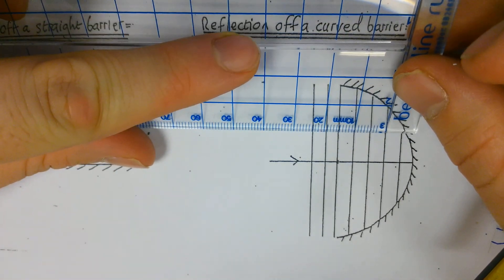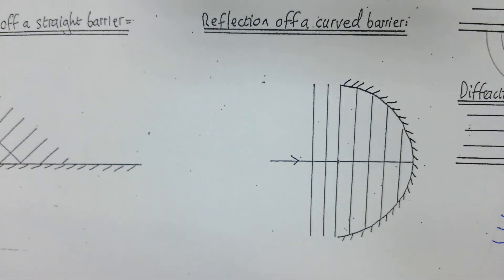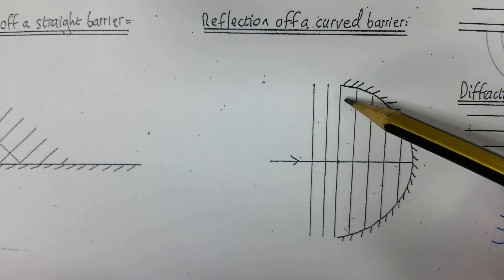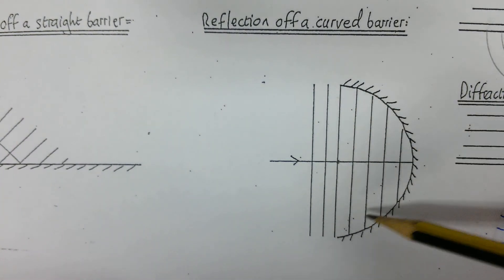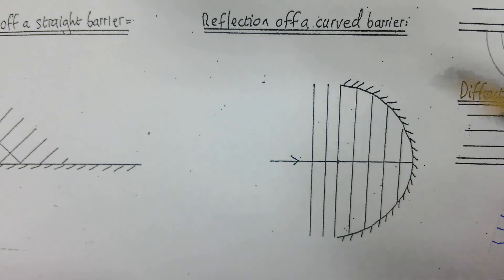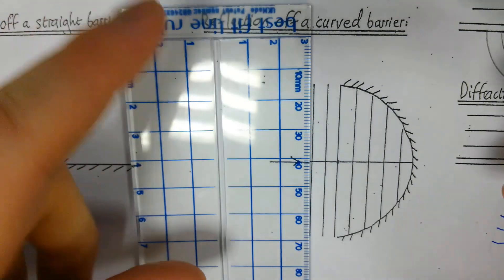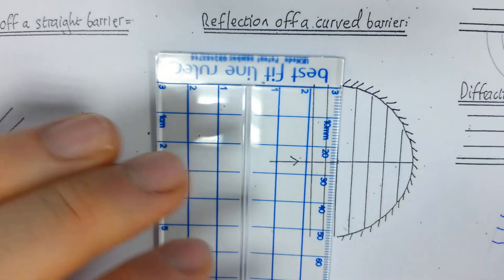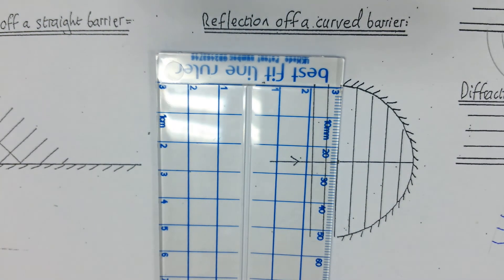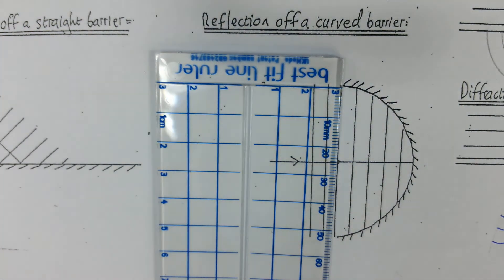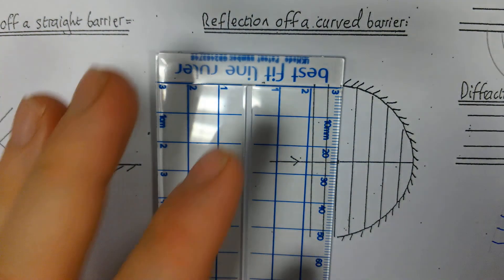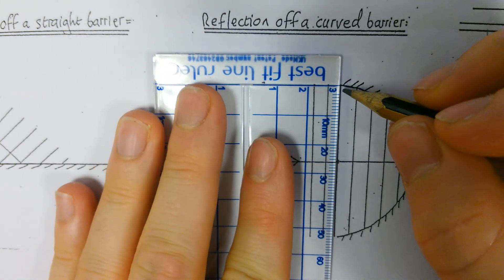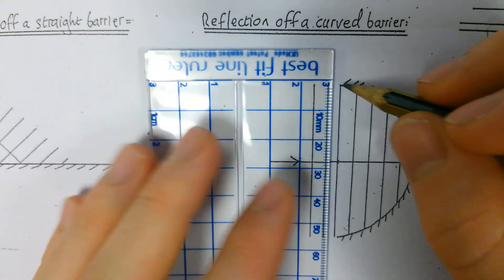The next thing I'm going to do is check how far apart the waves are — one, two, three, four, five millimeters. The reflected waves also need to have a consistent wavelength of five millimeters. So I'm going to draw on some marks to guide where the reflection is going to go — you'll see what I mean in a minute.